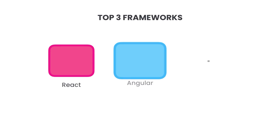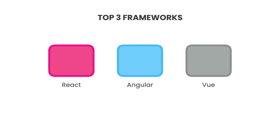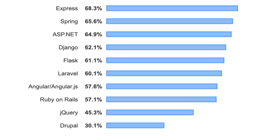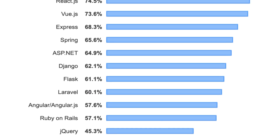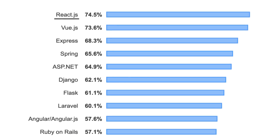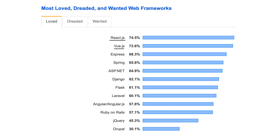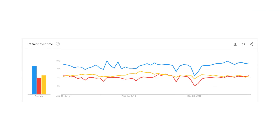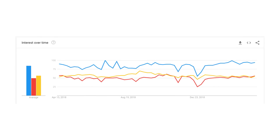React, Angular, and Vue are the top three tools for building applications these days, but which one is better? Let's find out. Look at the results of the Stack Overflow developer survey in 2019. Here's the list of the most loved web frameworks, and the winner is React. It is closely followed by Vue this year, and Angular seems to be losing its popularity compared to previous years. If you look at Google Trends, you can see that React is the most popular library out of the three.